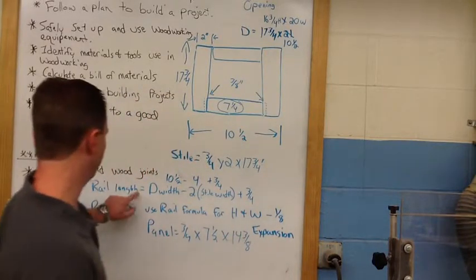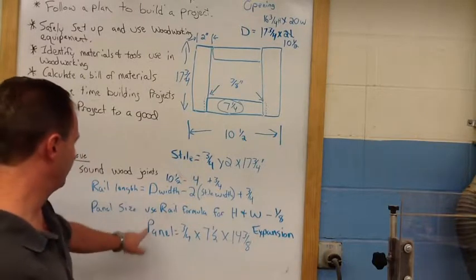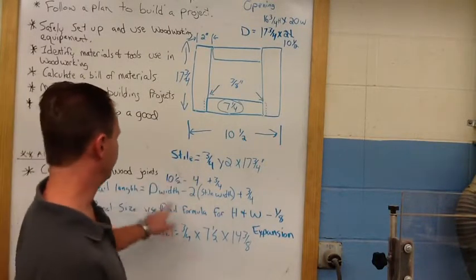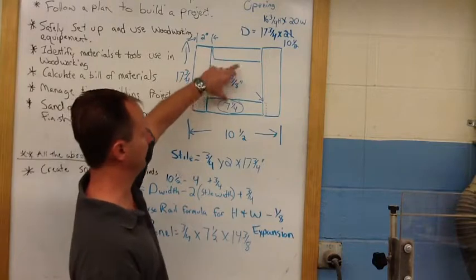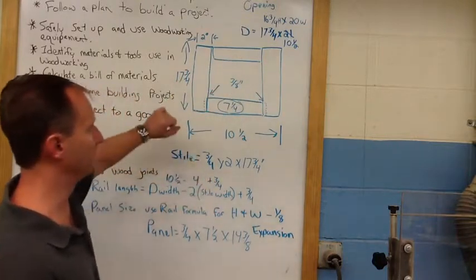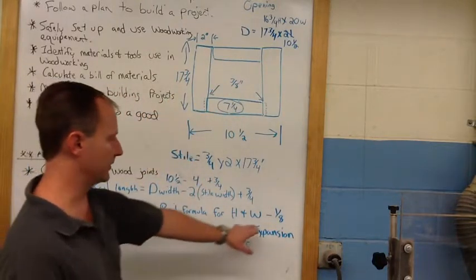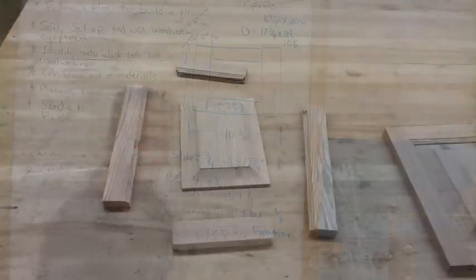Alright. So, here's the rail length formula for panel size. I use the same formula, and I just simply turn it, use the numbers accordingly for height and width, subtract an eighth inch at the end.